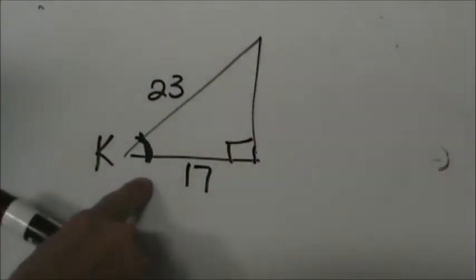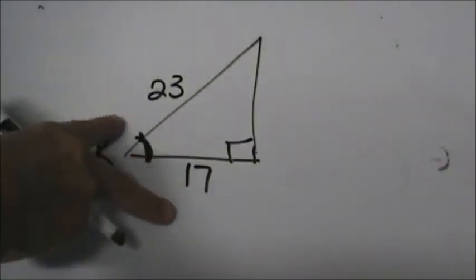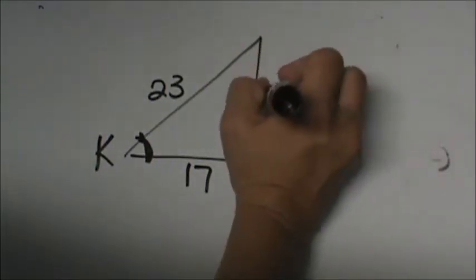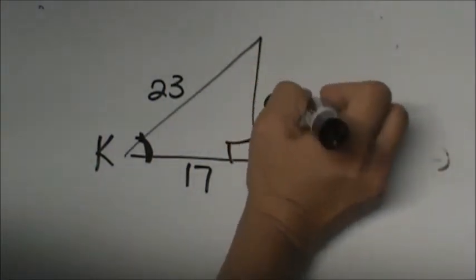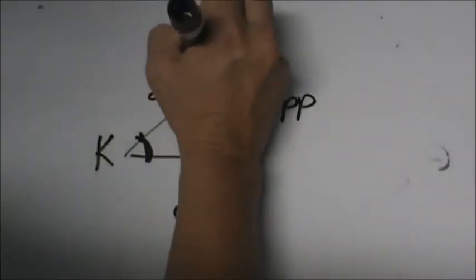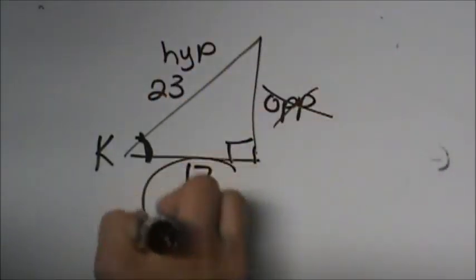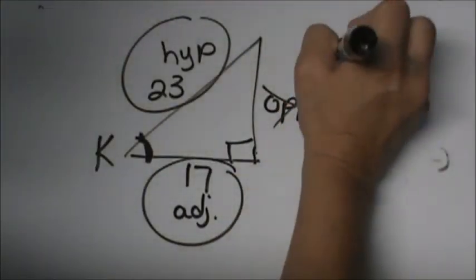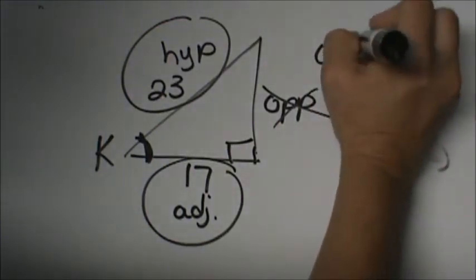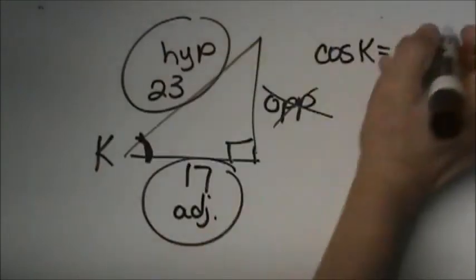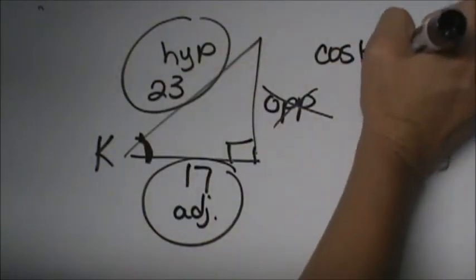So from angle K which two sides are these? Well this one is the opposite. This one is the adjacent leg and this one is the hypotenuse. We're not using opposite we're using adjacent hypotenuse. So which one is this one? Again this is cosine. So we're taking the cosine of angle K and that is equal to adjacent hypotenuse so 17 over 23.